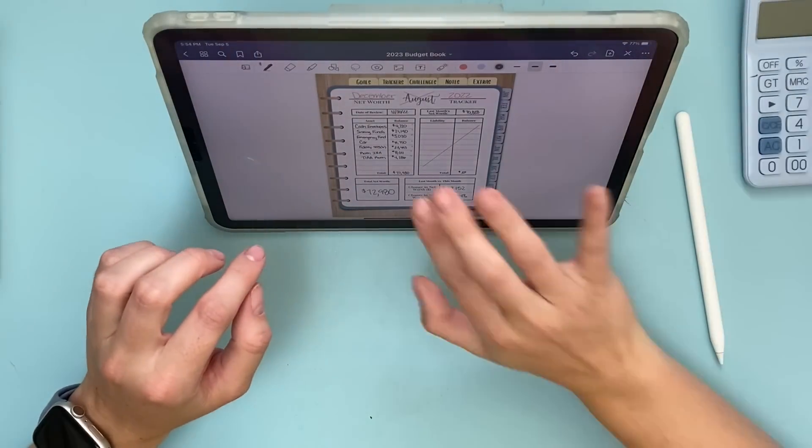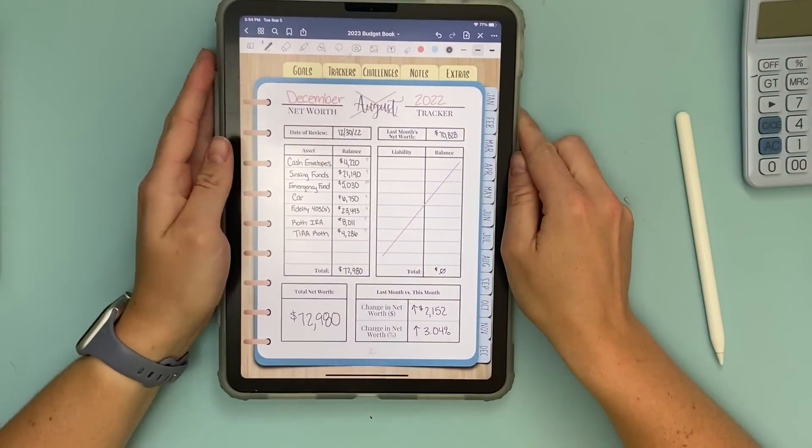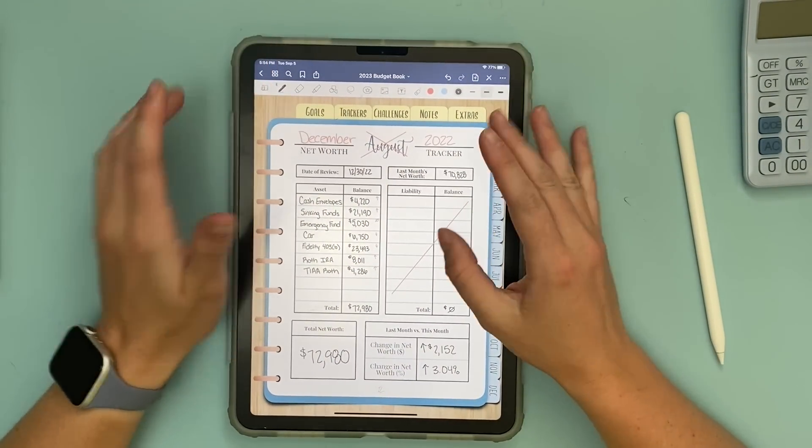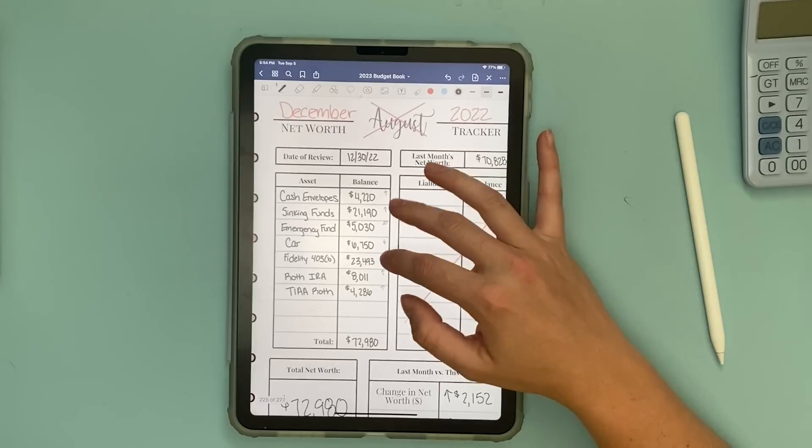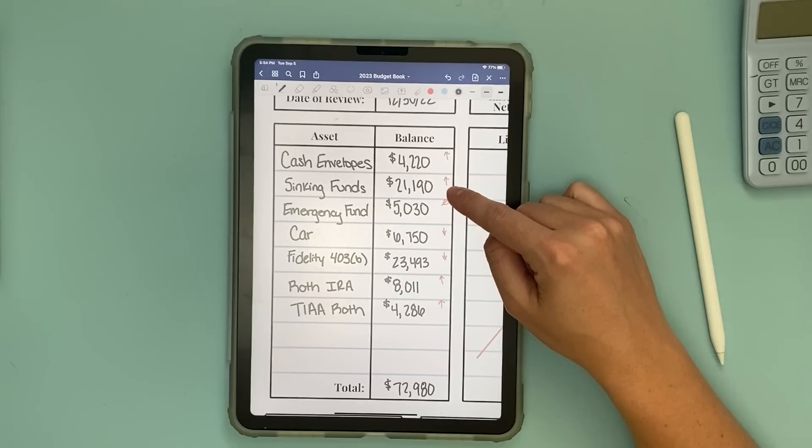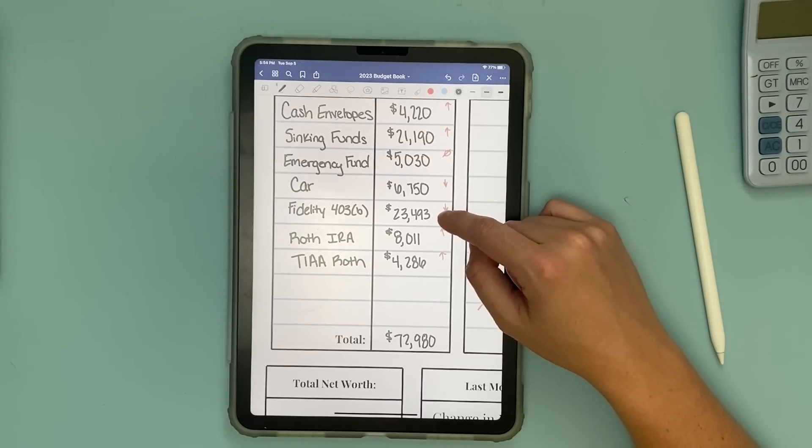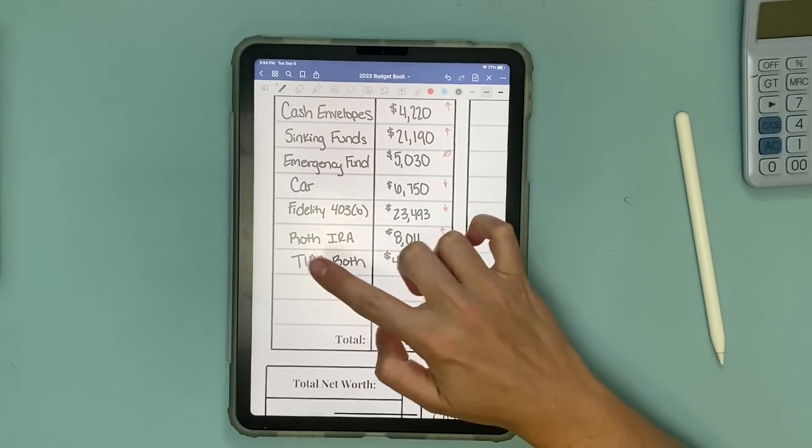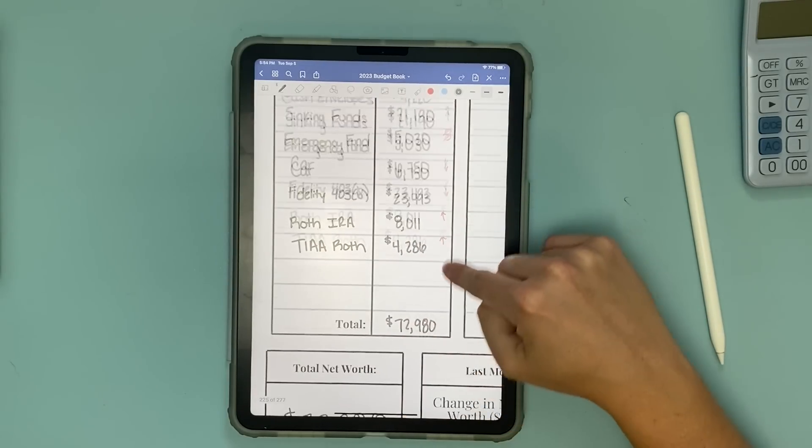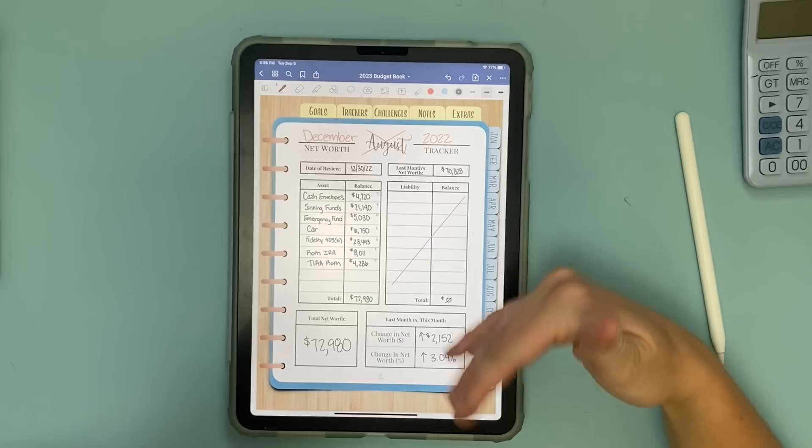This sheet here shows the last time I reviewed. It was December 30th when I did this last. My cash envelopes were at $4,220. My sinking funds were at $21,190. My emergency fund was at $5,030. My car was worth $6,750. My old retirement plan for my last job had $23,000 in it. My Roth IRA had $8,000 in it and my new employment retirement fund has $4,286 for a total net worth of $72,980.